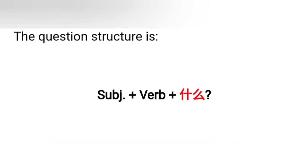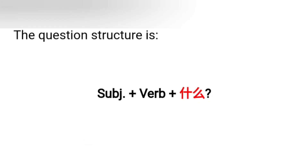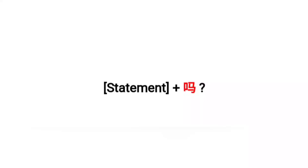Those are the two ways to ask questions. The first one is subject, verb, and 'shuma.' Remember that you can also use other wh-question words like who, when, and where for asking a question. And if you want to ask a yes-or-no question, you just add 'ma' at the end of the statement. That's all for this lesson. Take care.